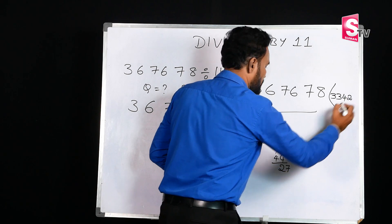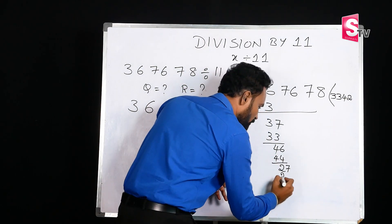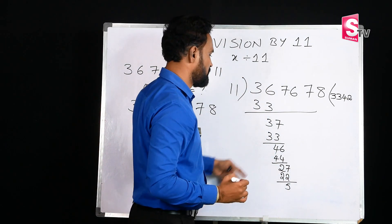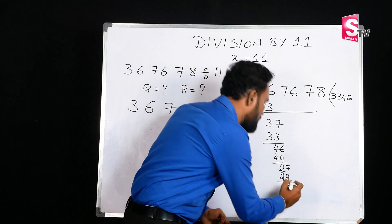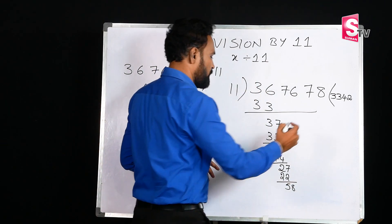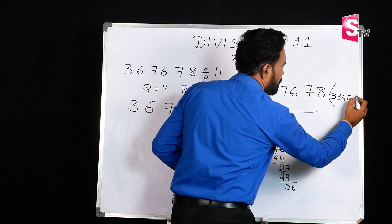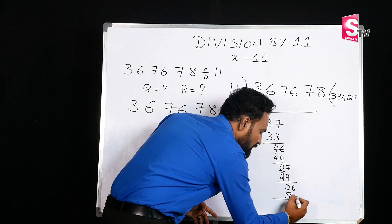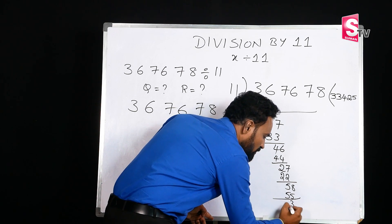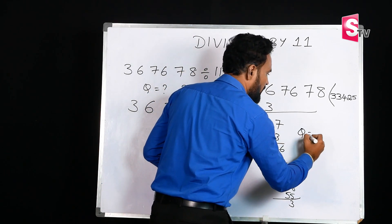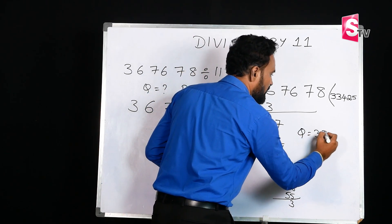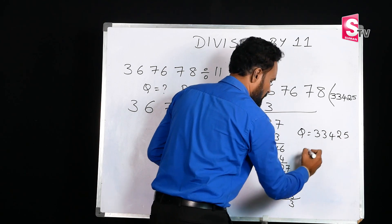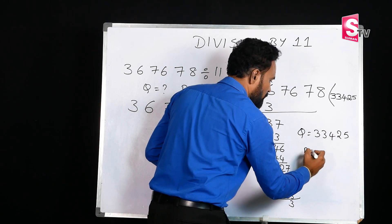Drop 7. Next, 11 times 2 are 22. The remainder is 5. Drop 8. 11 times 5 are 55. In last, remainder is 3. So, quotient is 33425 and remainder equals 3.